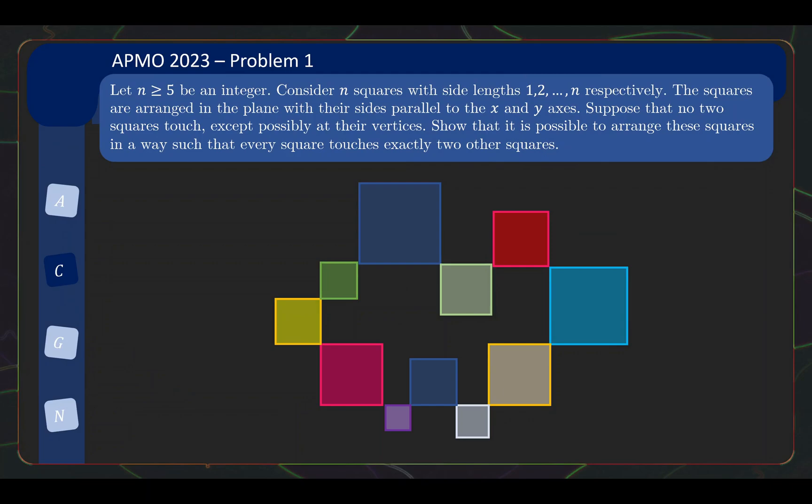For problem 1, we have a combinatorics problem. Let n greater than or equal to 5 be an integer, and consider n squares with side lengths 1, 2 until n respectively. The squares are arranged in the plane with their sides parallel to the x and y axis. Suppose that no two squares touch, except possibly at their vertices. Show that it is possible to arrange these squares in a way such that every square touches exactly two other squares.